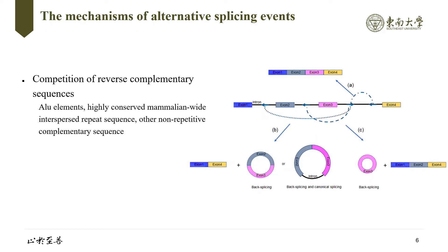Since circular RNA processing is related to transcription and pre-mRNA splicing, circularization is presumably influenced by both regulatory elements and trans-acting factors. For instance, spliceosome assembly and trans-acting factors have topological effects due to intronic sequences and RNA binding proteins. The mechanism of back splicing has been determined to some extent, and several factors related to generation of different circular RNA forms have been reported. Reverse complementary sequences flanking the circular exons, such as abundant Alu elements, highly conserved mammalian-wide interspersed repeat sequences, or other non-repetitive complementary sequences, are efficient in enhancing exon circularization by forming paired duplex structures.